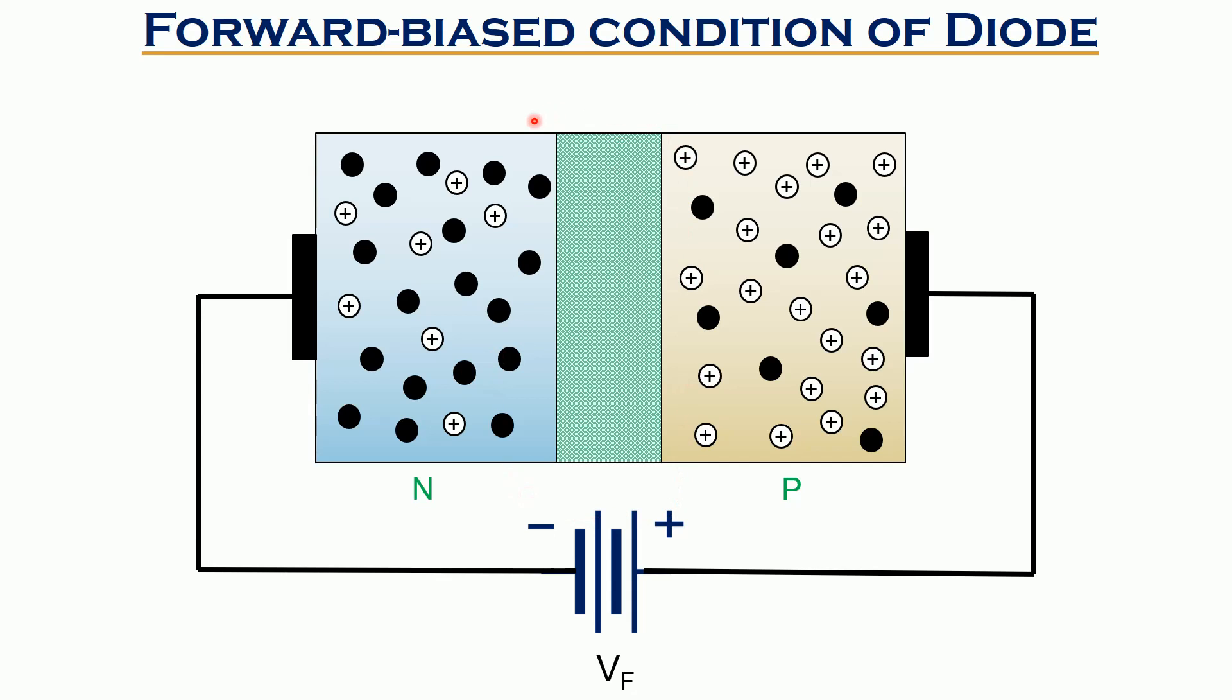This potential barrier needs to be exceeded to have a proper flow of current take place. It is required to exceed this barrier potential in order to have a flow of current through the device. The barrier potential is 0.3 volts for germanium and 0.7 volts for silicon. Now see how this happens.